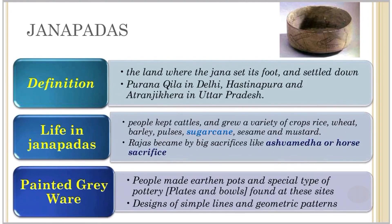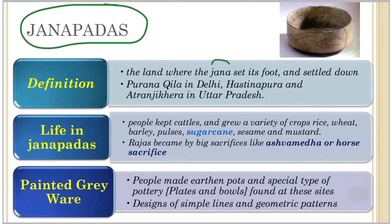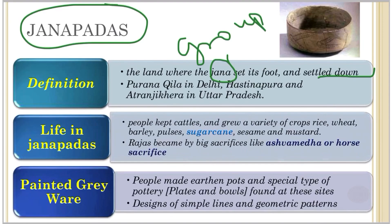Now we will study about Janapadas - the land where the Jan set foot. Jan was the group of people or community, and wherever they went and settled was called a Janapada. Examples found by archaeologists include Purana Qila in Delhi, Hastinapur, and Atranji Khera in UP. These were all sample Janapadas.